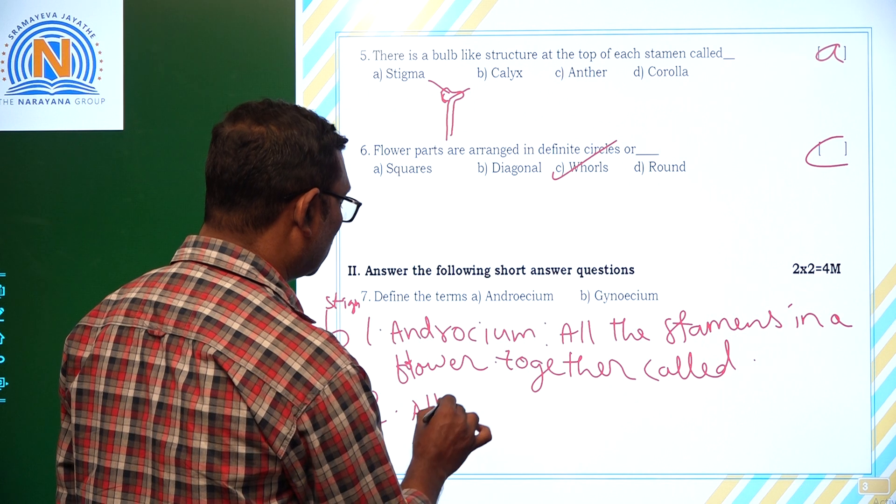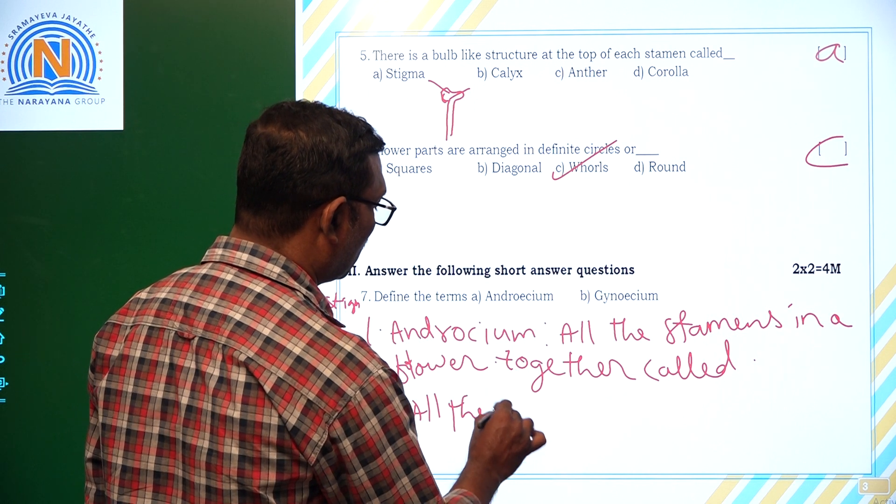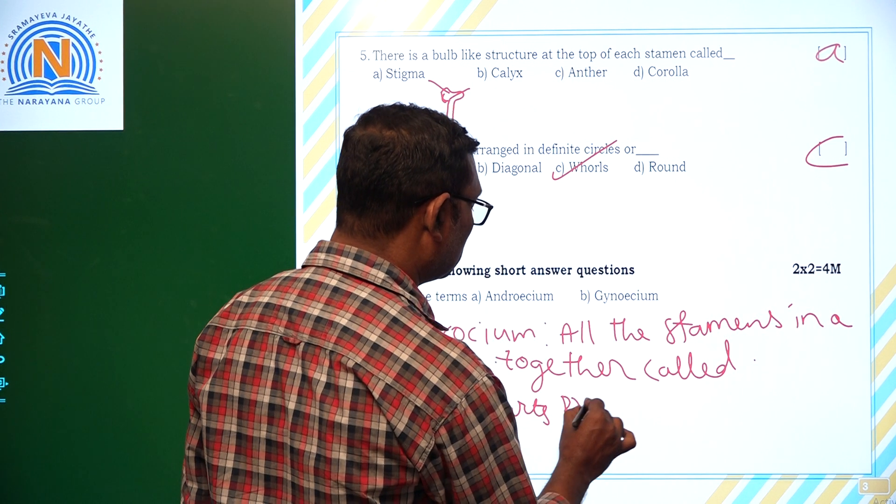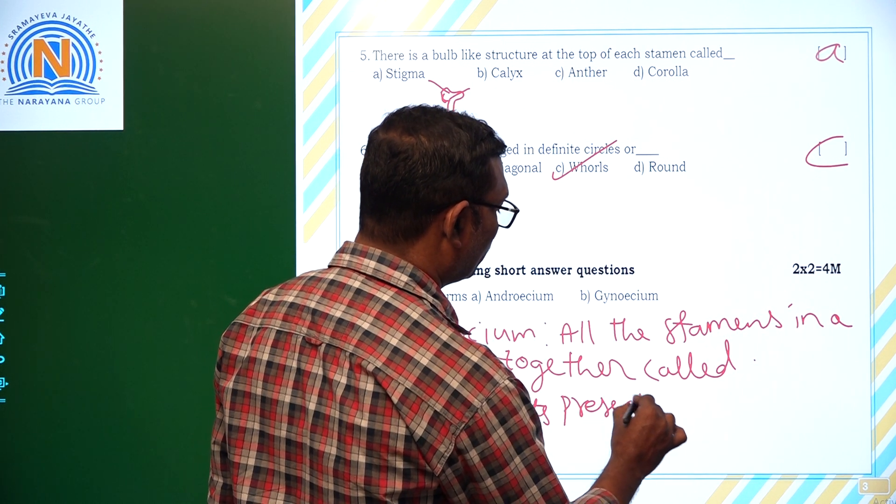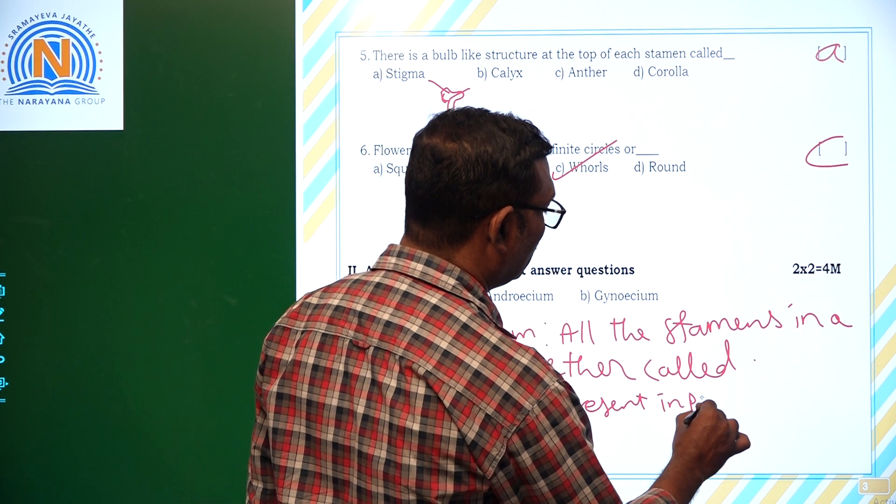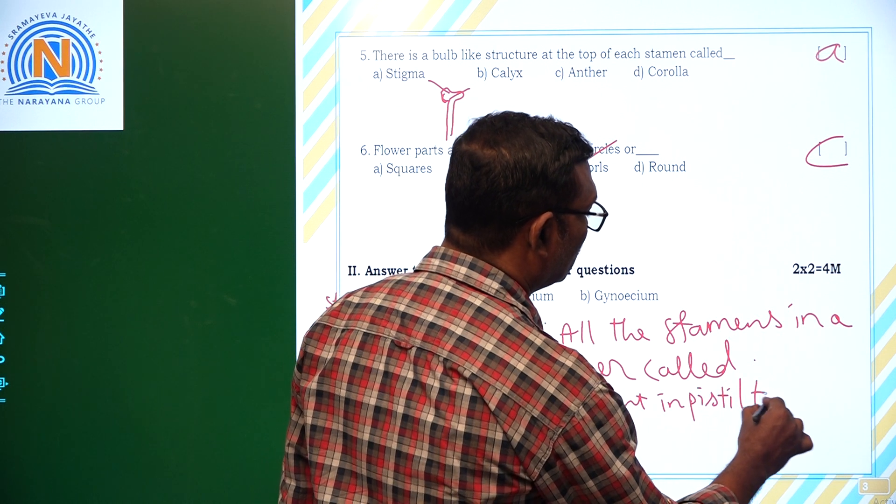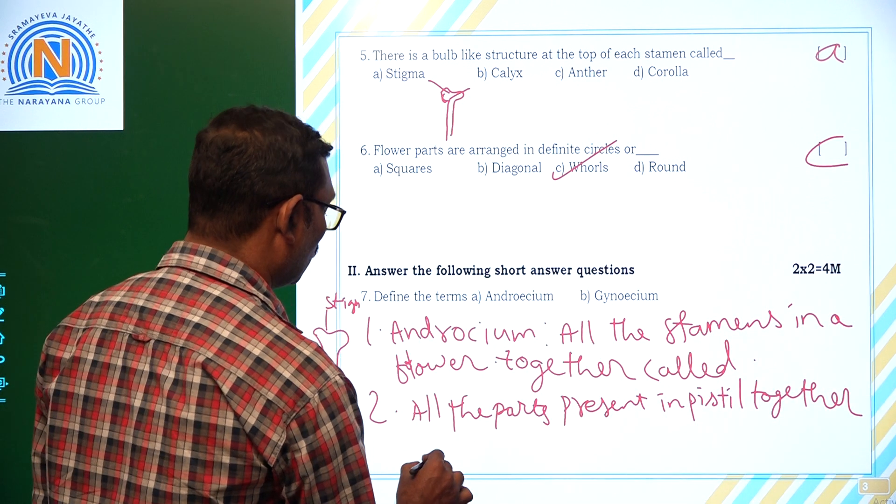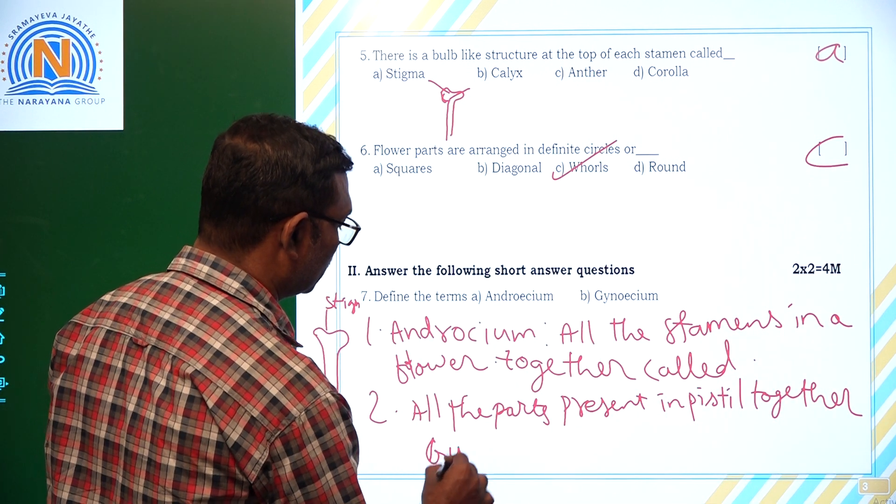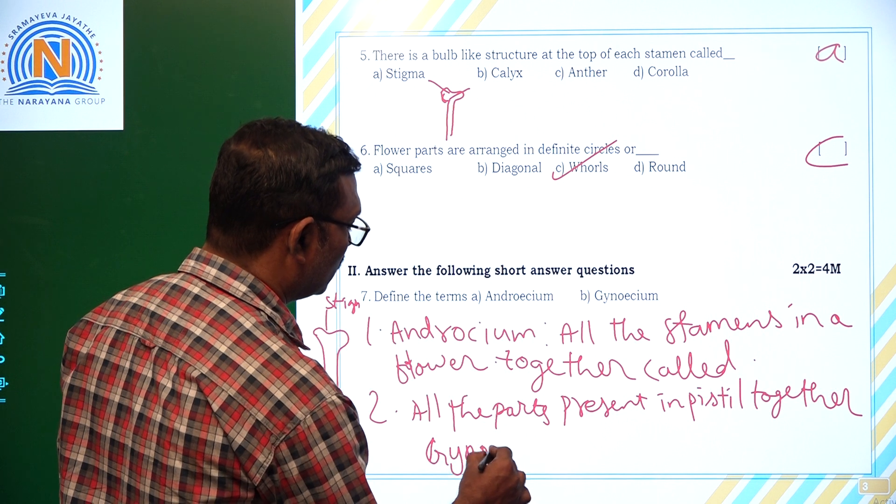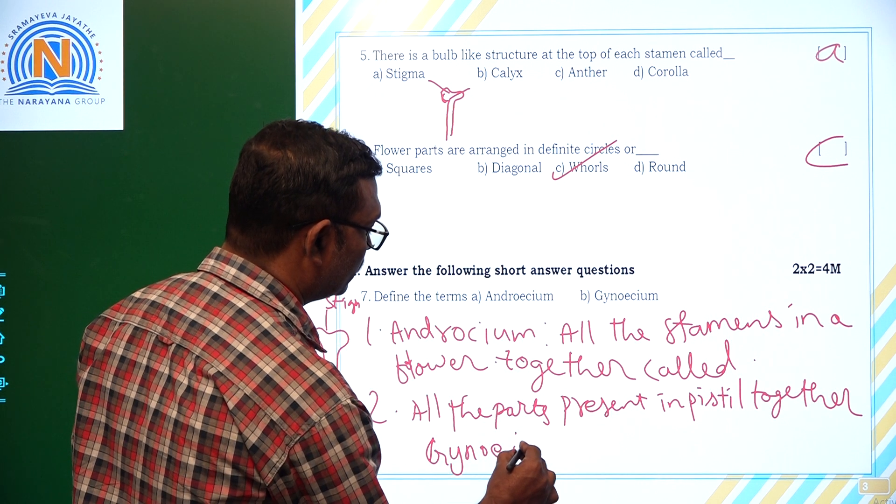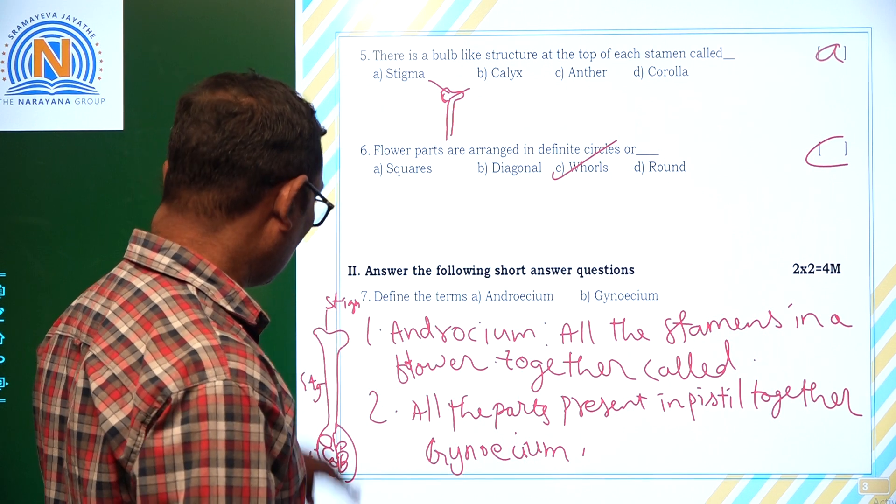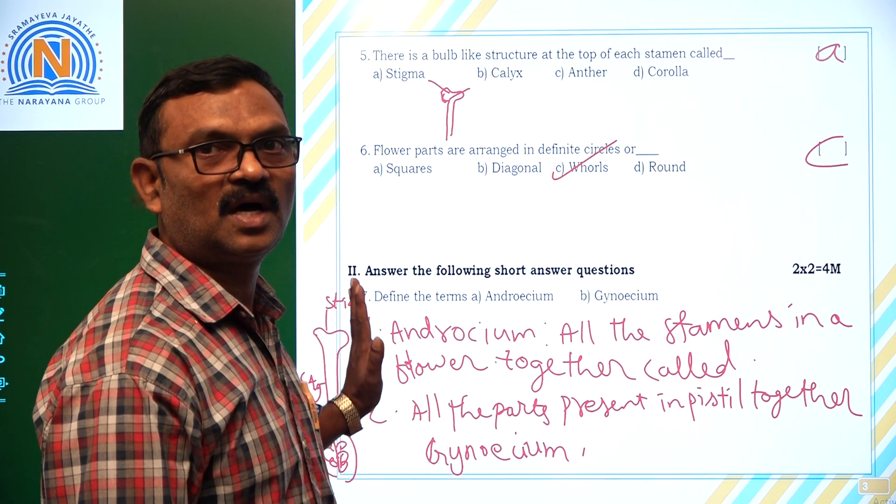These three parts together call it, that means all the parts present in pistil together called gynoecium. All the parts, these all together called gynoecium are female parts.